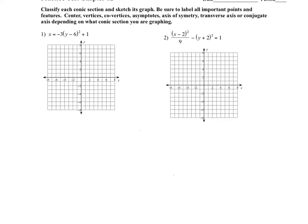So this first one is a parabola. How do we know it's a parabola? Because there's only one square term, which is y squared, and since it's y squared, it's going to open either right or left. A is negative, so this is a parabola opening left. You can get that just from the equation.